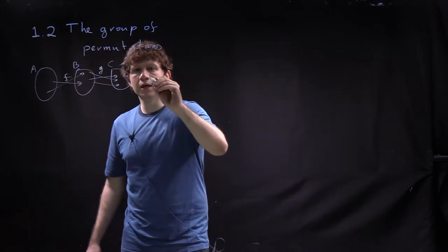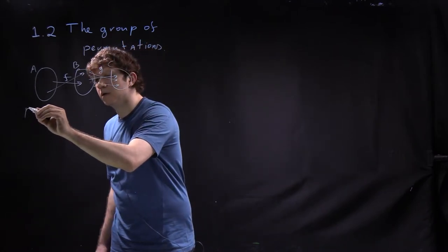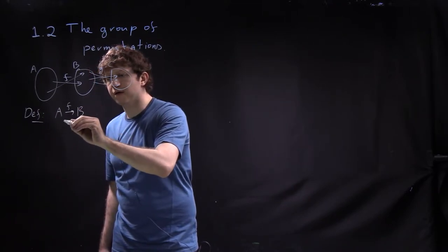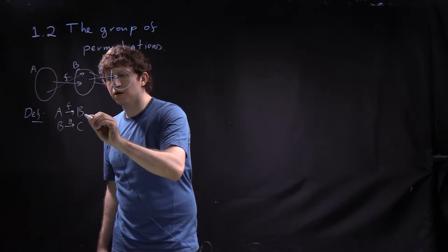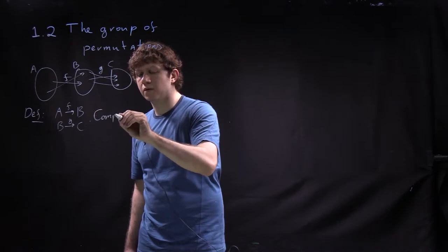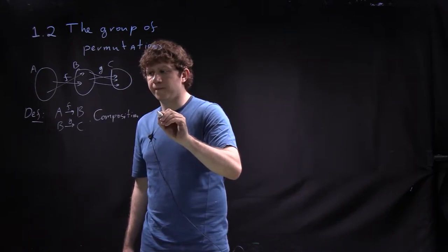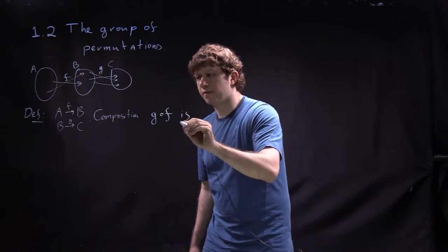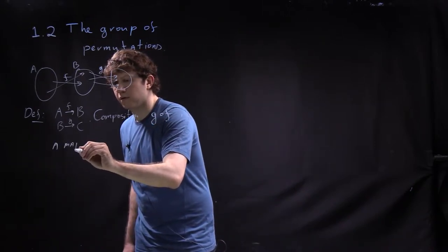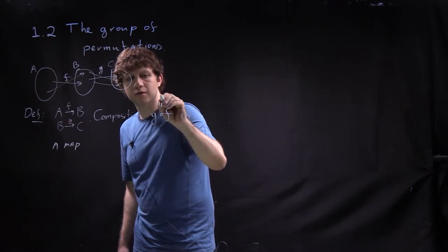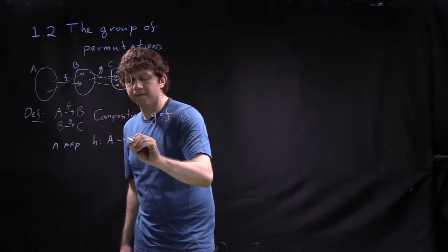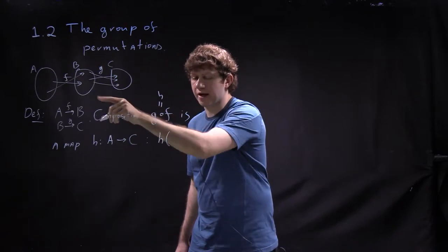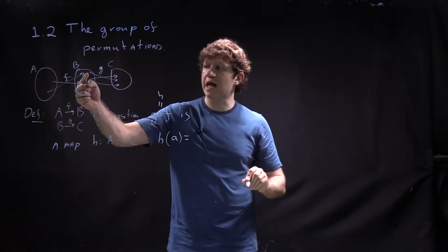So the composition — this is a definition. We have a map A to B called F, and B to C called G. The composition G composed with F is a map H from A to C, such that if I take H and apply it to any element a in A, I first apply F and then apply G.